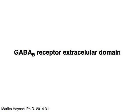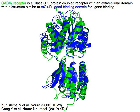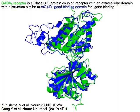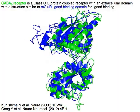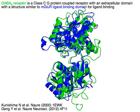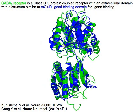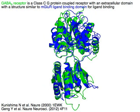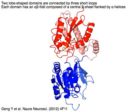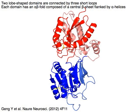GABAB receptor extracellular domain. GABAB receptor is a class C G protein-coupled receptor with an extracellular domain having a structure similar to mGluR ligand binding domain. Two lobe-shaped domains in blue and red are connected by three short loops.